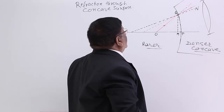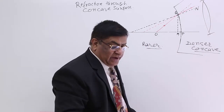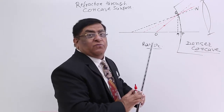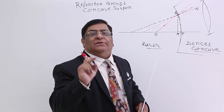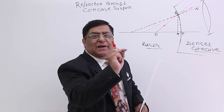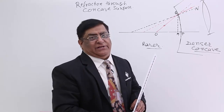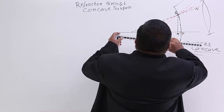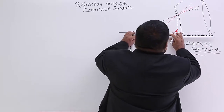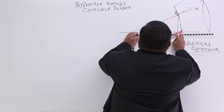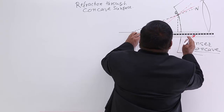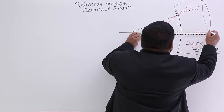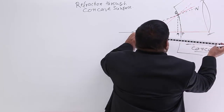From the object we have to take two rays. One ray we take along the principal axis — that will go undeviated.